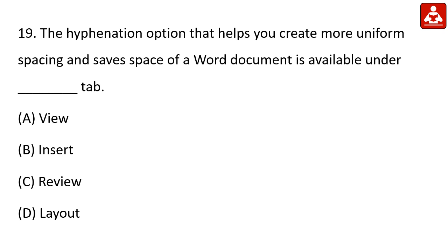The hyphenation option that helps you create more uniform spacing and save space in a Word document is available under which tab? Option D is the right answer: Layout tab.